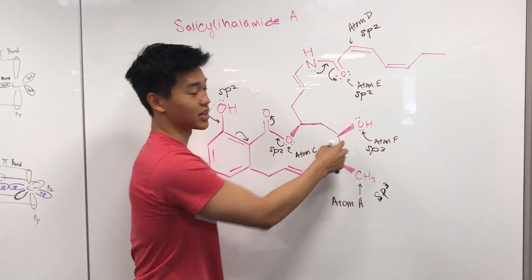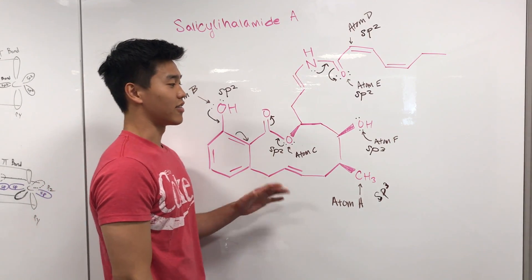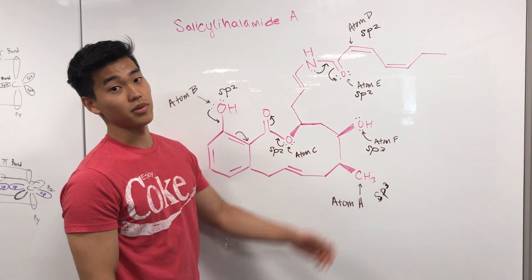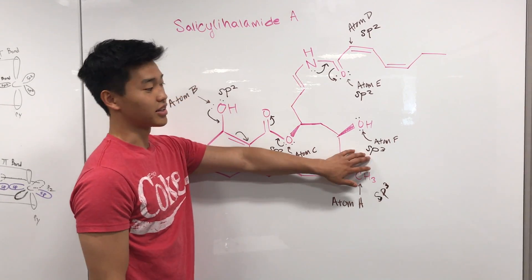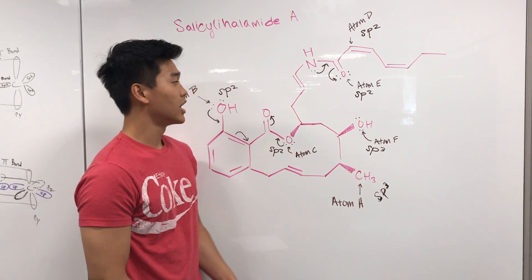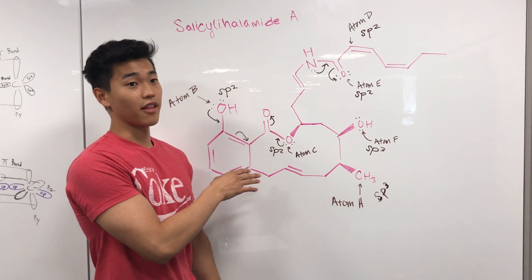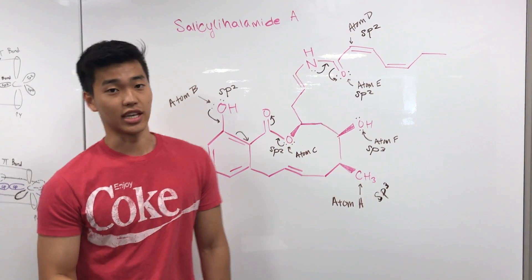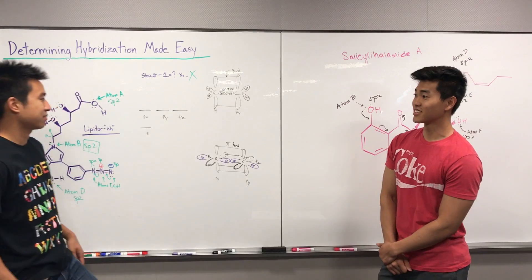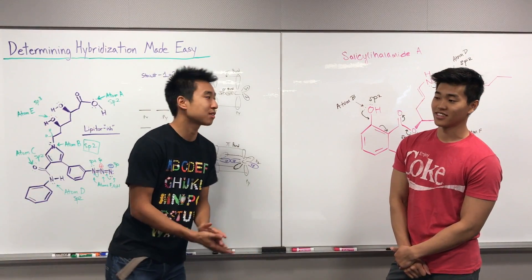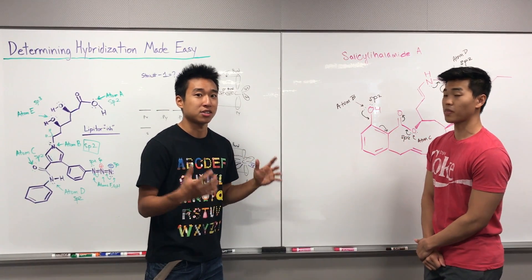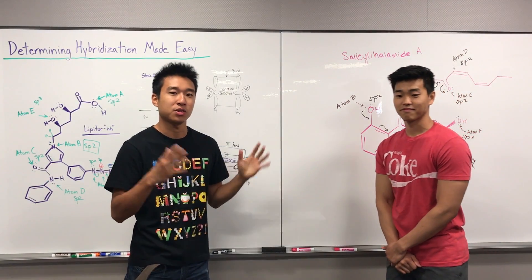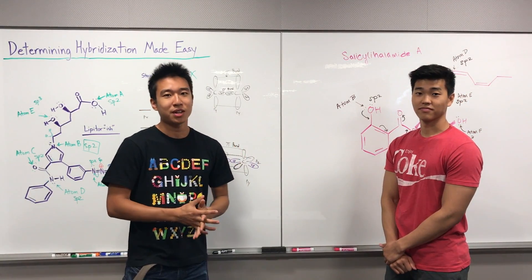Atom F has no resonance structures, so none of its p orbitals participate in any bonding — one s orbital and three p orbitals all hybridize to create sp3 orbitals. That's the end of this problem. If you got the correct answers, great job! Hopefully our explanation made sense. Just remember: maximum number of pi bonds determines how many p orbitals are sacrificed — that's all you need to know. You don't need steric numbers.